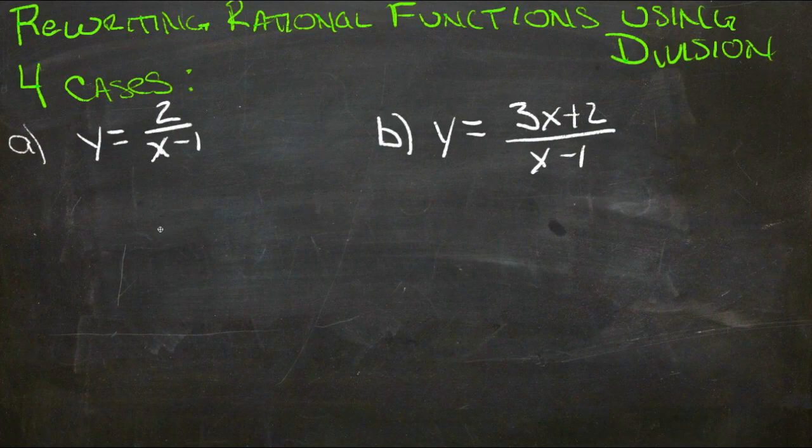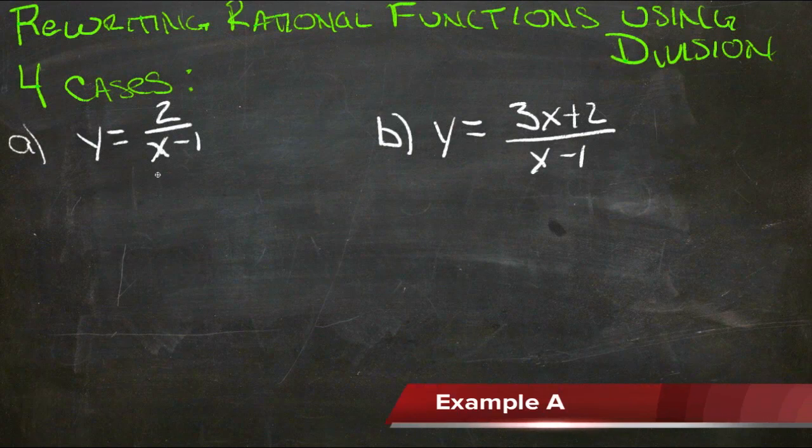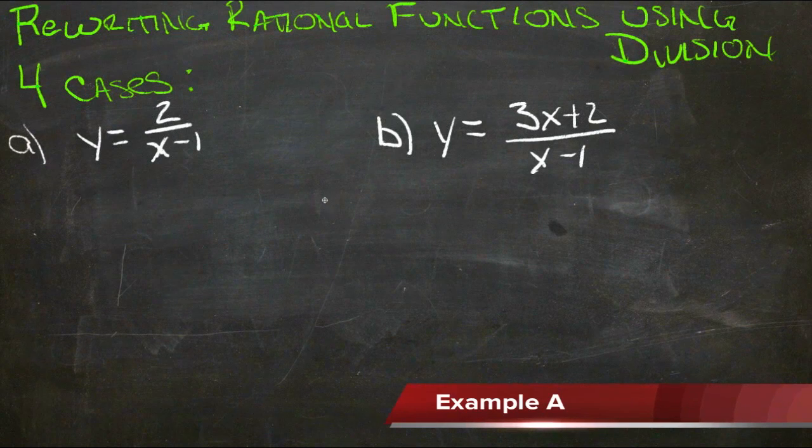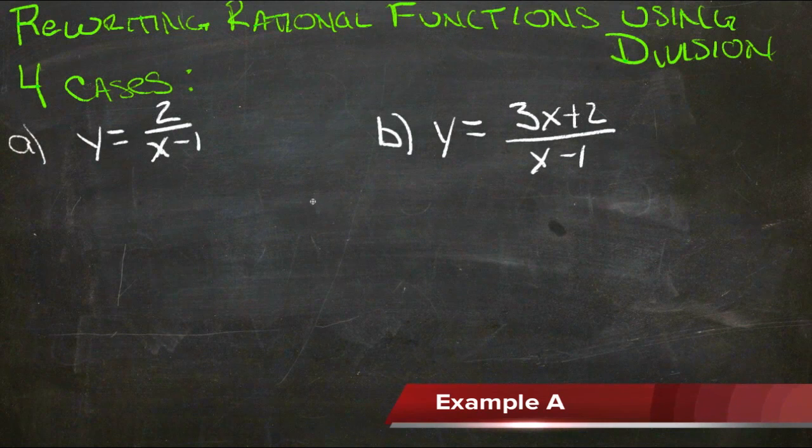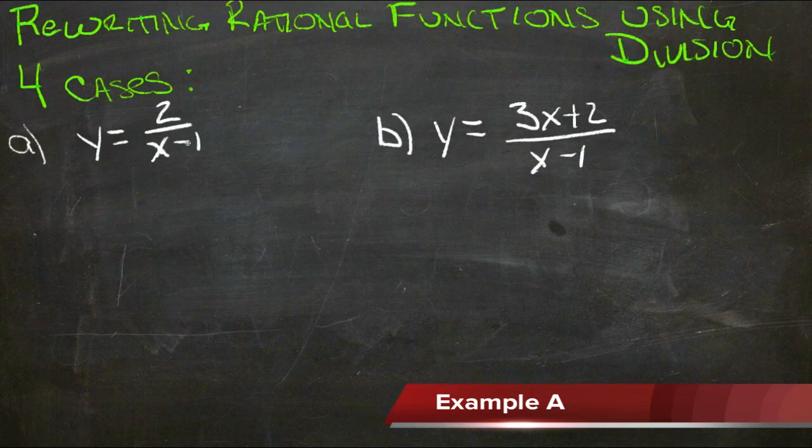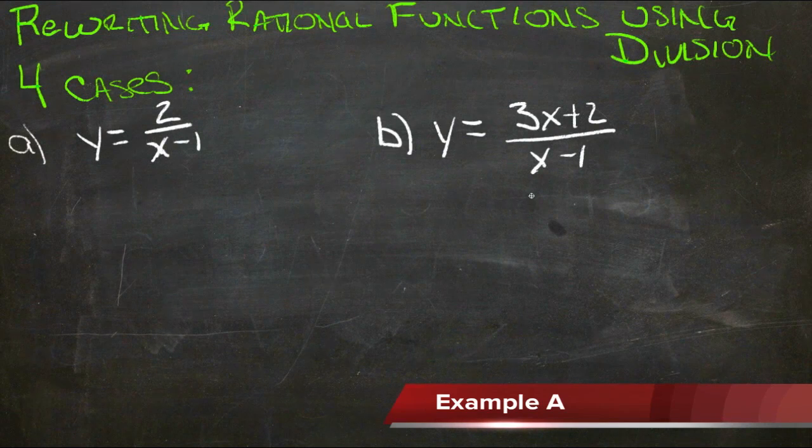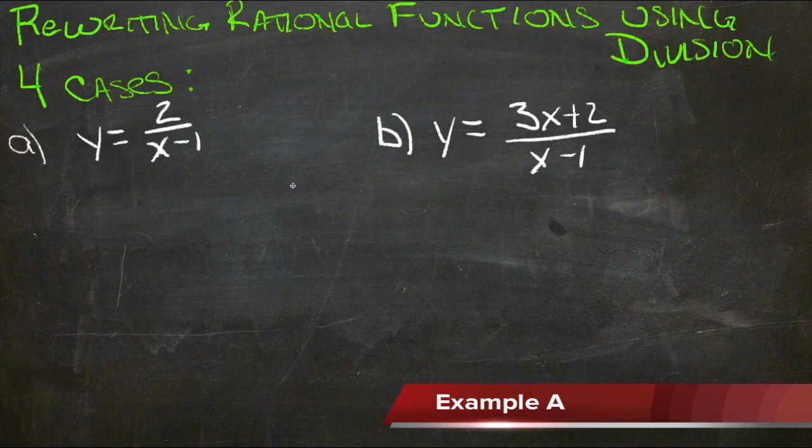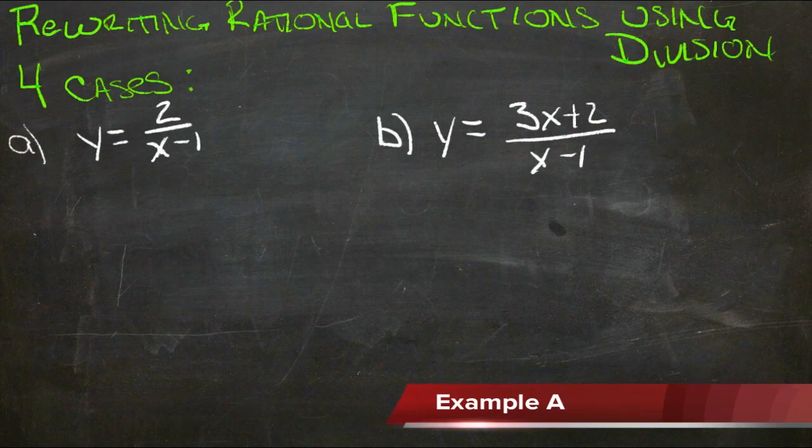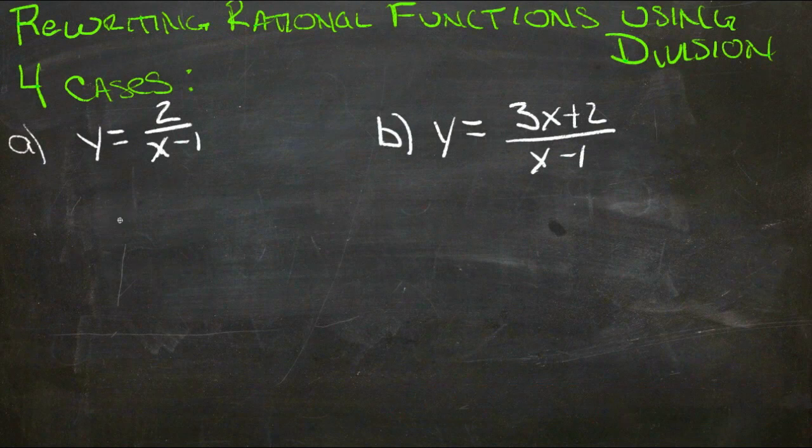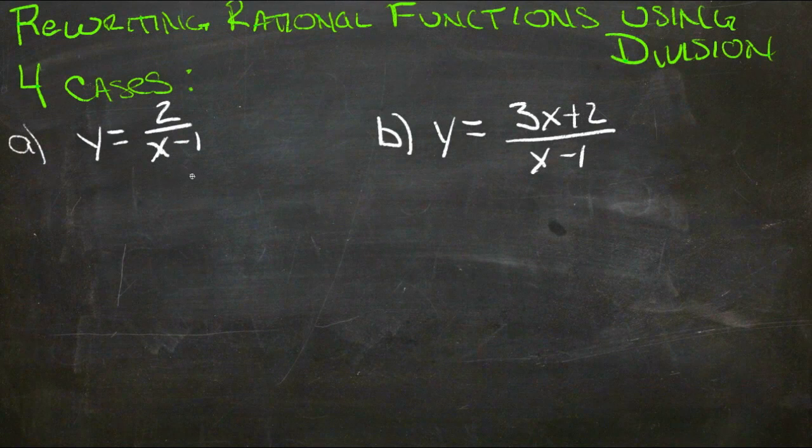We're going to practice rewriting rational functions using division, just looking at what the function could become and what it could not become as the values of x get really huge. We're going to be rewriting these expressions to find the horizontal asymptote for each one. The process here is just a matter of logic, just thinking things through. Let's take these one at a time and see what happens as x becomes really big.